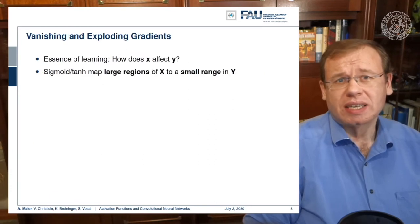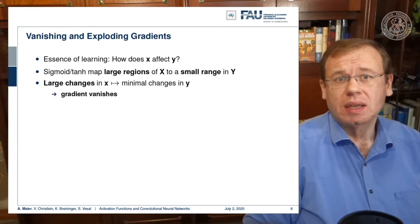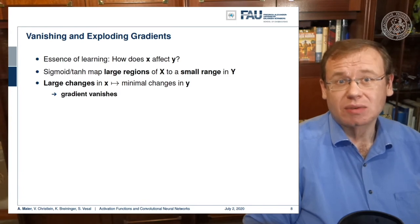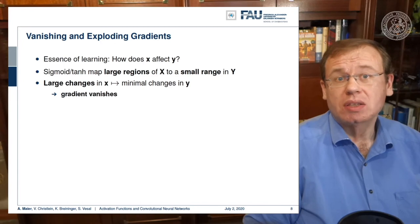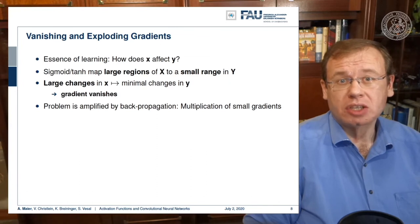The essence here is how does x affect y? Our sigmoid and hyperbolic tangent, they map large regions of x to very small regions in y. This means that large changes in x will result in minimal changes in y. So the gradient vanishes. The problem is amplified by backpropagation where you have many steps of very small numbers. If they are close to zero and you multiply those update steps with each other, you get an exponential decay. The deeper you build the network, the faster the gradient vanishes.